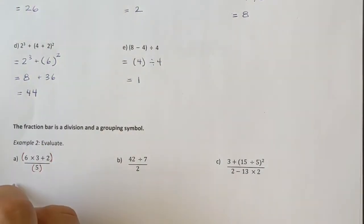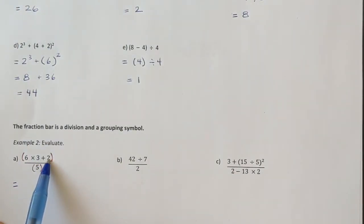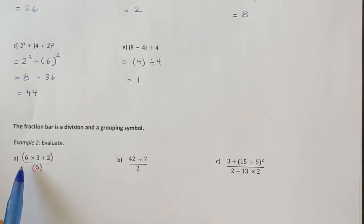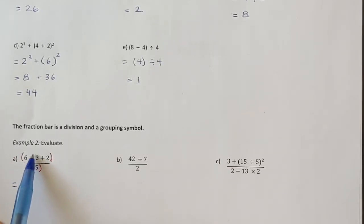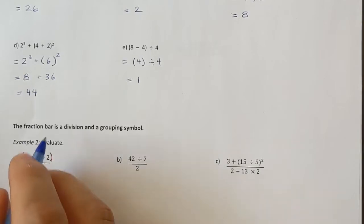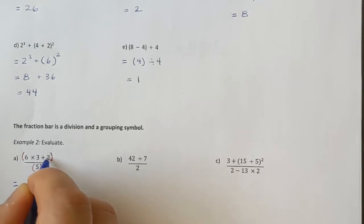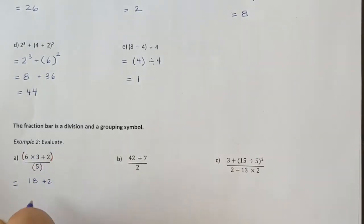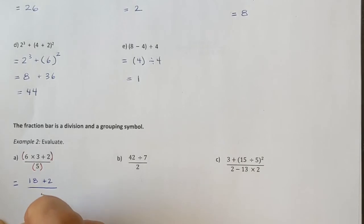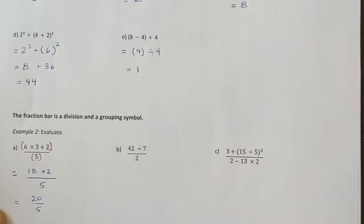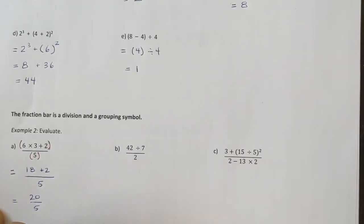Looking at the numerator first: 6 times 3 plus 2. BEDMAS means I multiply first, so 6 times 3 is 18, then plus 2. Still divided by 5. 18 plus 2 is 20 divided by 5, and 20 divided by 5 is 4.